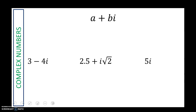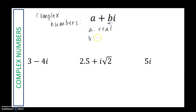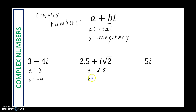Complex numbers are in the form a plus bi, where a is the real part and b — the coefficient of i — is the imaginary part. For 3 minus 4i, the real part is 3 and the imaginary part is negative 4. For 2.5 plus i root 2, the real part is 2.5 and the imaginary part is square root of 2. For 5i, it's a complex number with a real part of 0 — think of it as 0 plus 5i — so the imaginary part is 5.